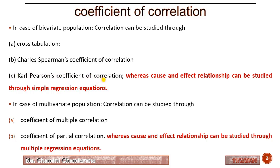Carl Pearson's coefficient of correlation is the technique where cause and effect relationship can be studied through simple regression equations. In case of multivariate population, the correlation can be studied through two methods: coefficient of multiple correlation and coefficient of partial correlation, where cause and effect relationship is studied through multiple regression equations.